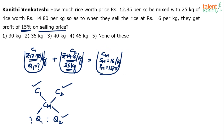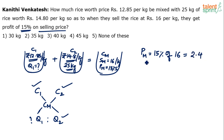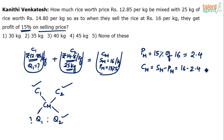The profit on the mixture is 15 percent of the selling price, which is 15 percent of 16 rupees — that equals 2.4 rupees. So the cost price of the mixture equals selling price minus profit: 16 minus 2.4, which is 13.6 rupees per kg.